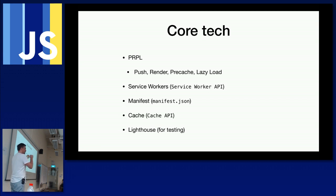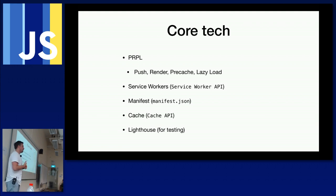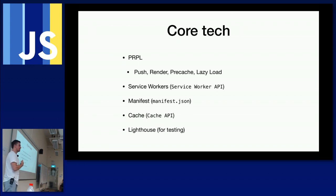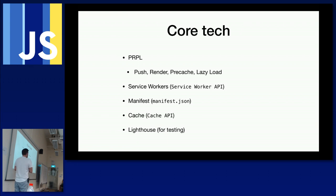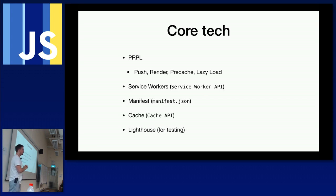There's also the Cache API. For a PWA to work offline, it needs to store assets — it stores them in the cache, which you can manipulate using the Cache API. Lighthouse is a tool built into Chrome DevTools (available since around version 60) that gives your PWA a score and explains what you need to change to improve it — telling you what works and what doesn't in your app.